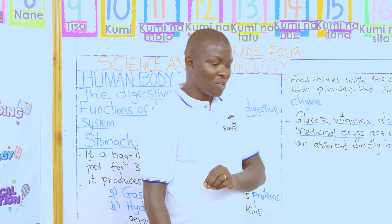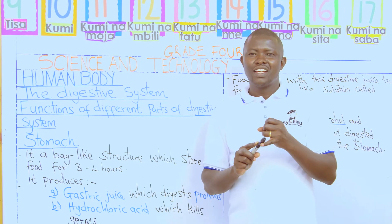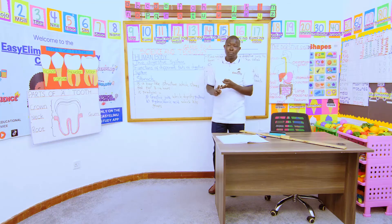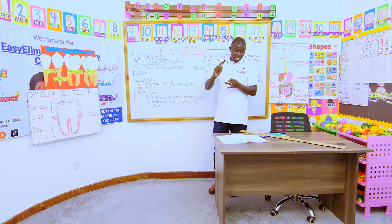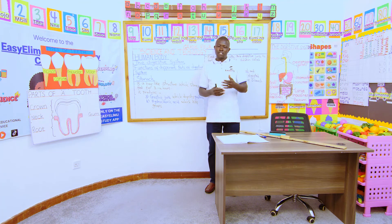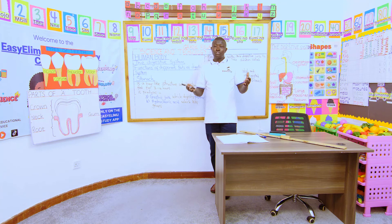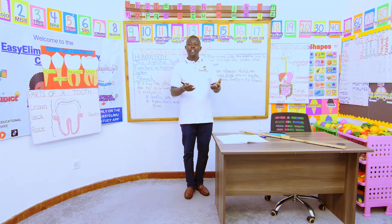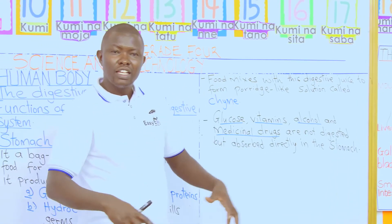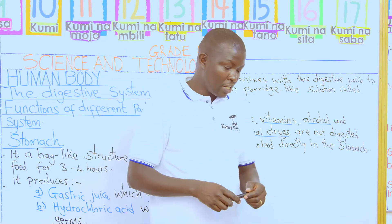Are we together? So we have said: gastric juice digests proteins, and the hydrochloric acid produced in the stomach kills all the germs that could be present. Once the food is in the stomach, it mixes with the digestive juices to form a porridge-like fluid which we call chyme, so that it can be easily digested further or the absorbed food can move on in the coming lesson.